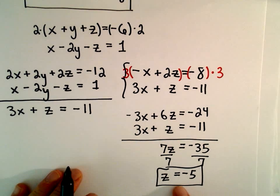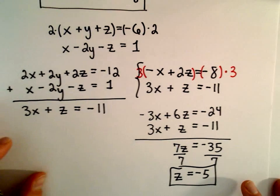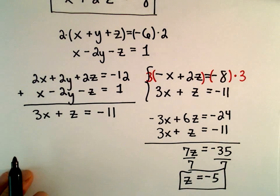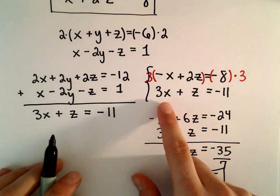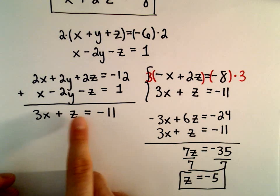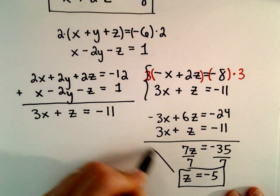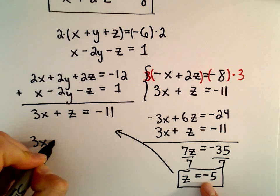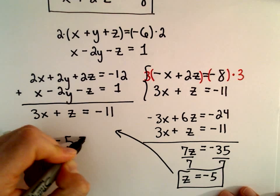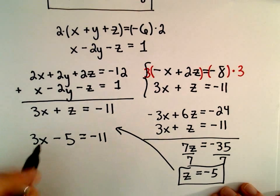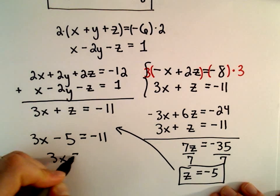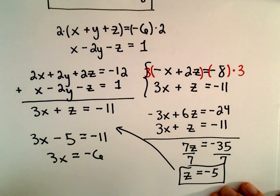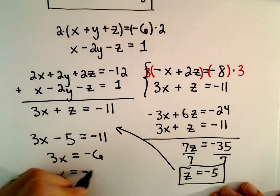Once you've figured out one value, the rest fall into place quickly. One of the equations we had was 3x plus z equals negative 11. Substituting z equals negative 5, we have 3x minus 5 equals negative 11. Adding 5 to both sides gives negative 6, and dividing both sides by 3, we get x equals negative 2.